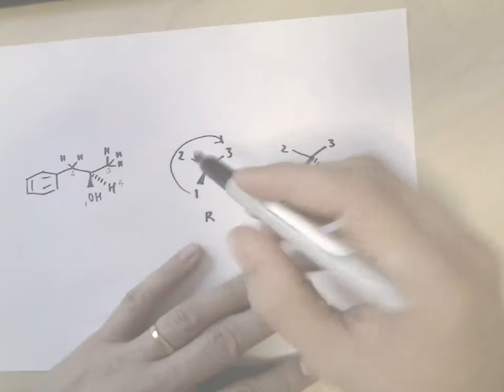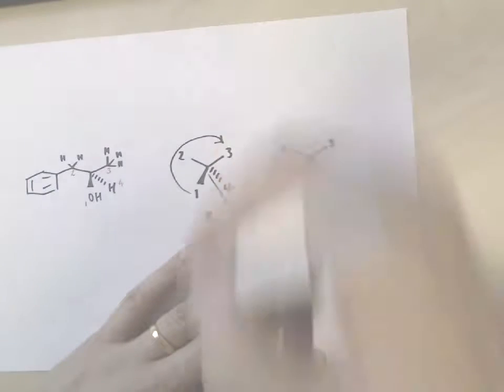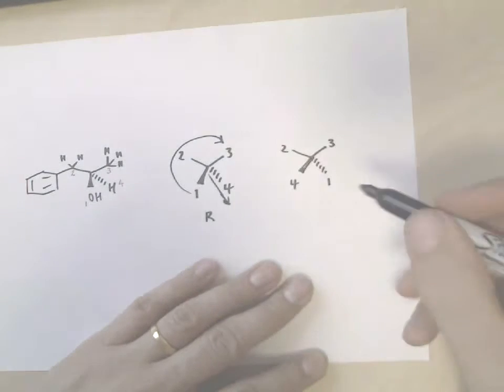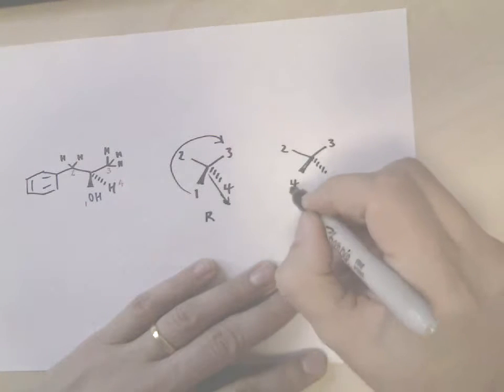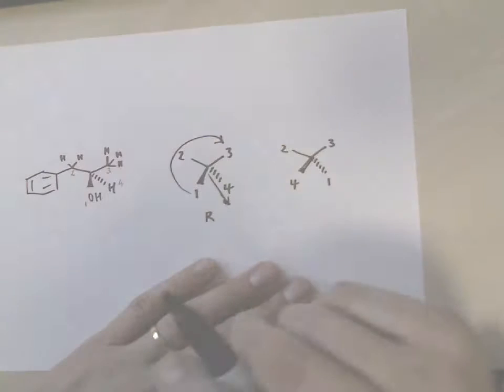Remember, you have to look from the chiral center down this group of lowest priority. But in this example, we're looking from the group of lowest priority to the chiral center, so that's the wrong way.